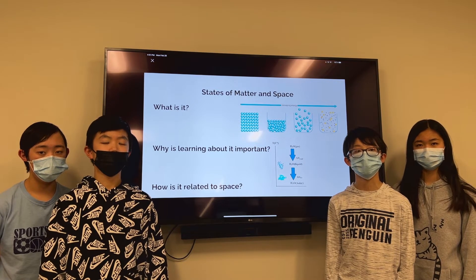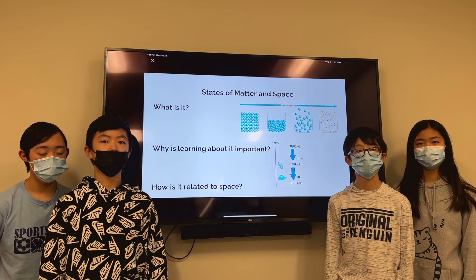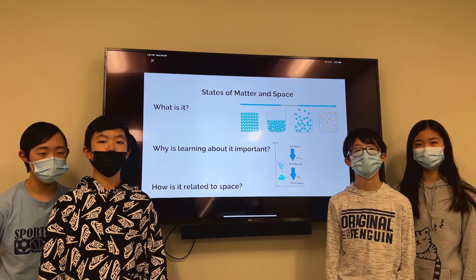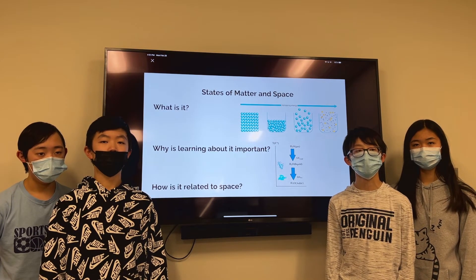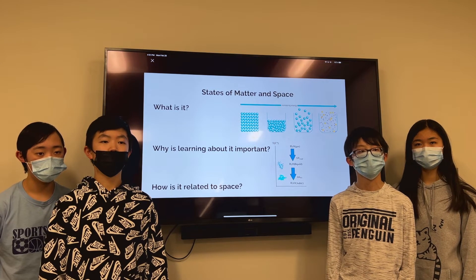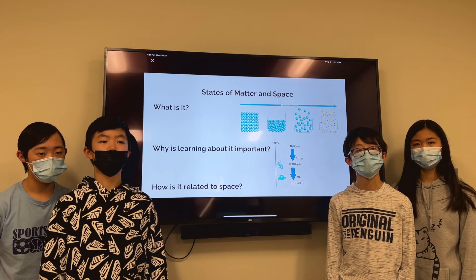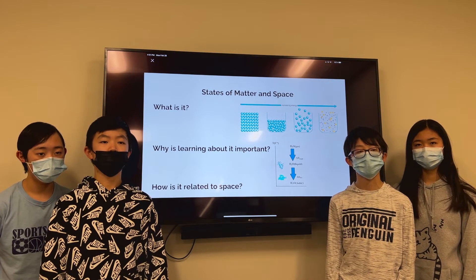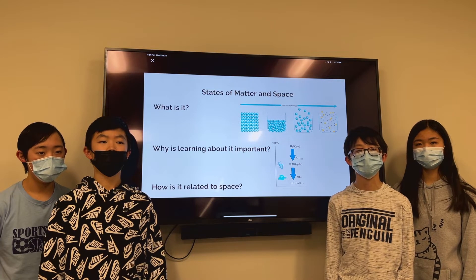In solids, atoms retain a compact structure and vibrate in place. In liquids, the atoms can move around, or as we see it, flow. In gas, the atoms can move around quickly and disperse, usually far enough to be unable to see them. In plasma, electrons are ripped from atoms in the gas.